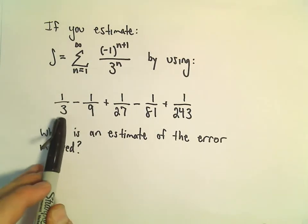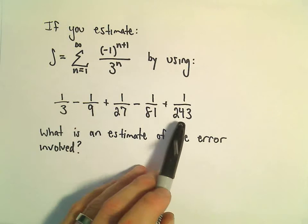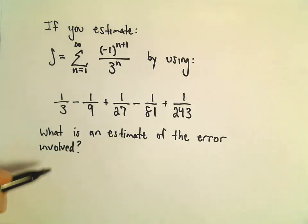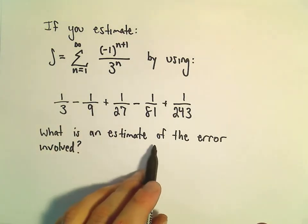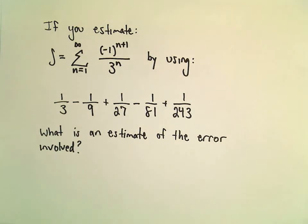So notice this is n equals 1, 2, 3, 4, 5. So in this case, the error is at most the size of the absolute value of the first neglected term.